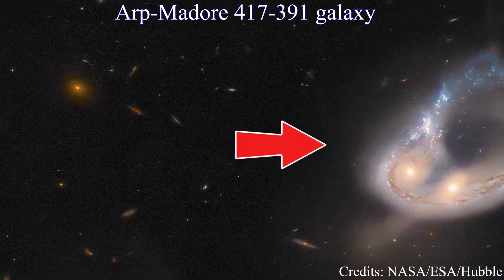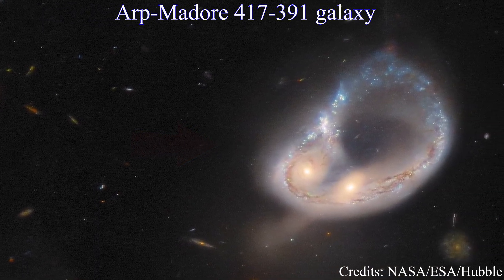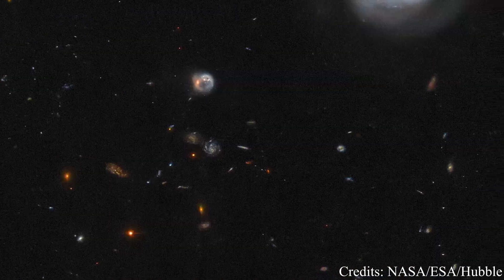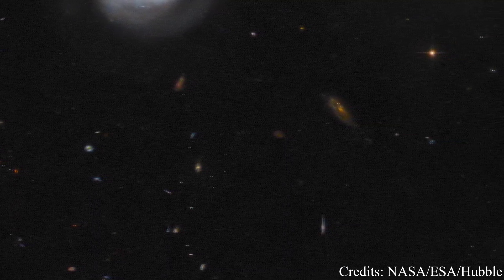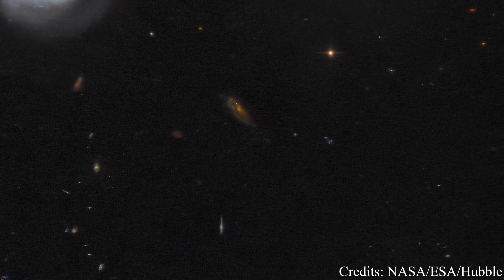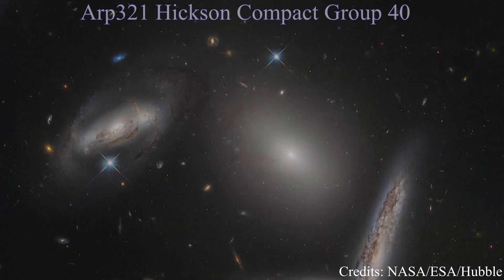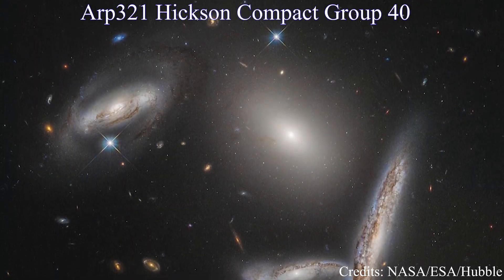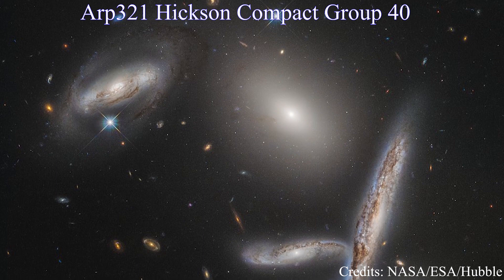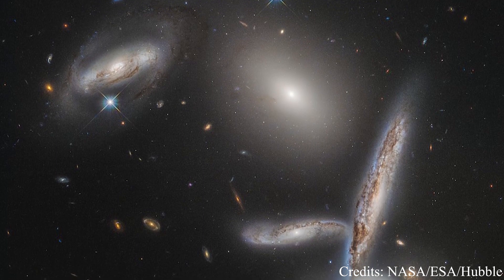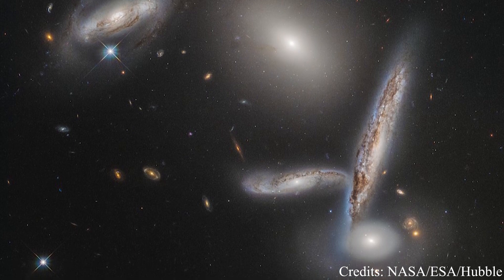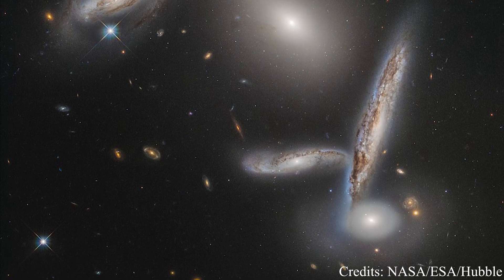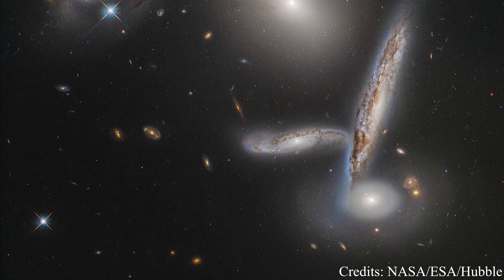In fact, galaxies don't travel in space separately. Particularly, they form so-called galaxy clusters — structures that consist of anywhere from hundreds to thousands of galaxies that are bound together by gravity. And of course, galaxies and clusters interact among themselves. But what actually happens when two or more galaxies meet each other? In this video we will try to figure it out.